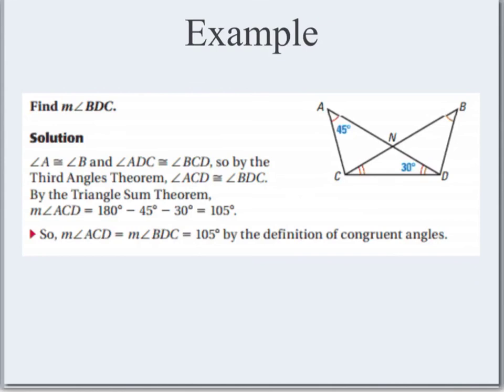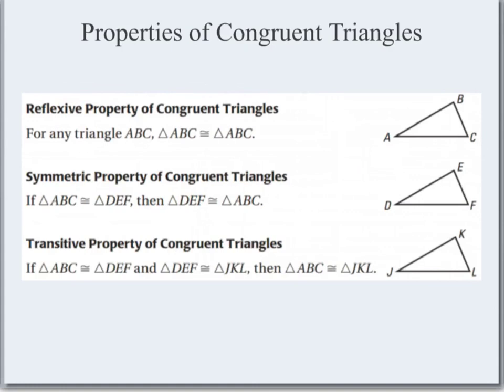Let's move on to some properties of triangle congruence. We still have the reflexive property — one triangle is always congruent to itself. If you photocopied triangle ABC, you could cut one copy out and it would obviously fit on top of the other. Then we've got the symmetric property, which says if triangle ABC is congruent to triangle DEF, then triangle DEF is congruent to triangle ABC — we could cut out either one and place it on top of the other.